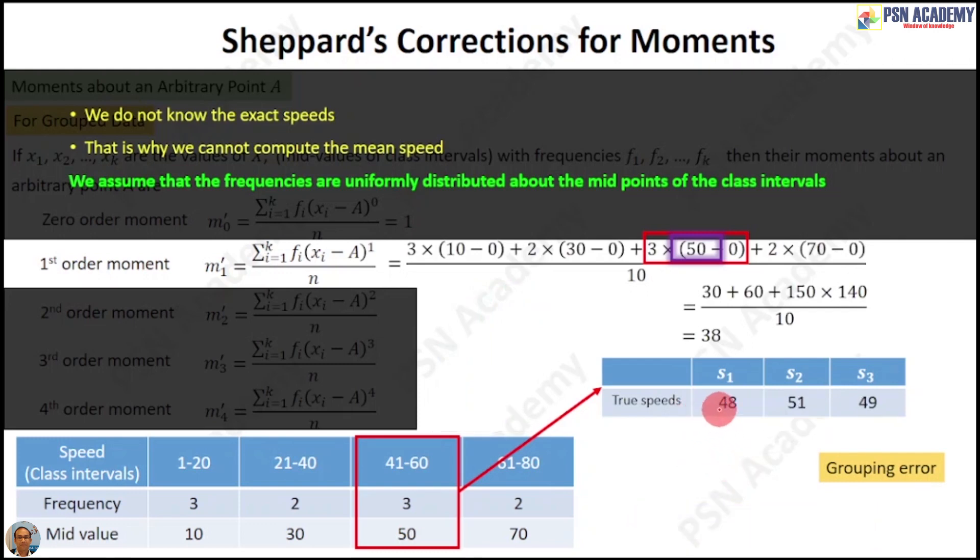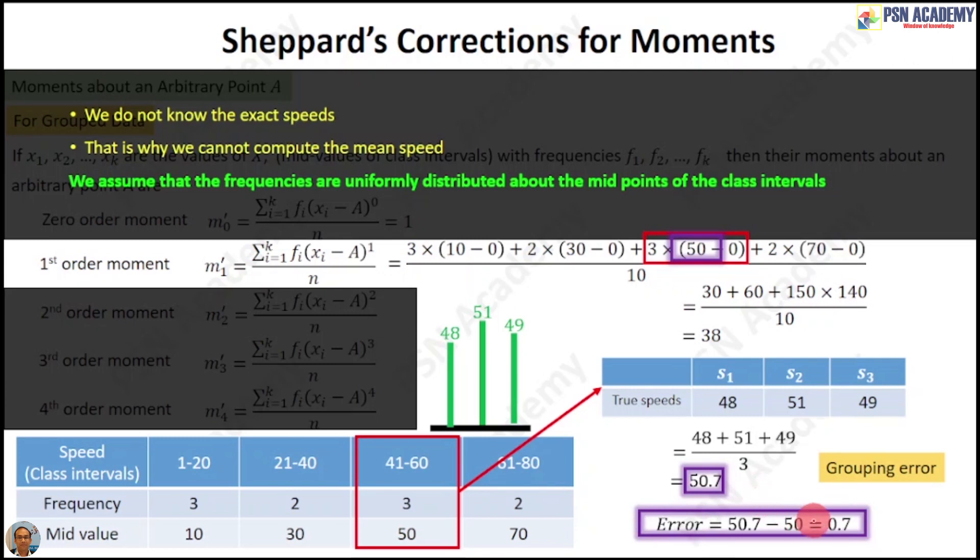Let us suppose we have the true speeds as 48 kmph, 51 kmph, and 49 kmph in the third class interval. Visually, it will look like this. You can see the data is around 50. The middle one has a difference of 1 kmph. On the left-hand side, it's 48, and on the right-hand side, it's 49. This distribution is somewhat symmetrical about the midpoint 50. If we go for the mean, we get 50.7, and the error has gone down to 0.7.